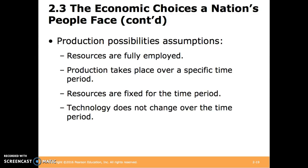A few assumptions we make with the PPC. First, resources are fully employed. Second, production takes place over a specific time period — we can consider something like a day in a factory and consider what we can actually make. Resources are fixed for the time period; we wouldn't expect a factory to be able to change its machinery or its location in a day. And technology does not change over the time period — that factory is not going to produce a different amount because of a technology change over a day. In the next slides, we'll look at a table showing production possibilities and then a graph where those production possibilities have been graphed.